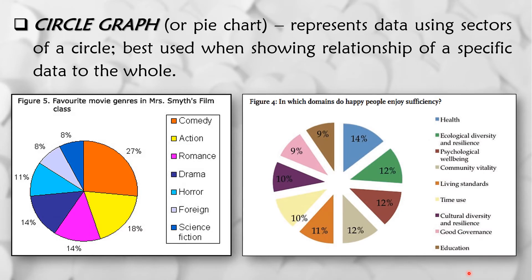Another example of circle graph or pie chart is this one. So again, ang mga percent na ito ay equals 100%. And then yung color blue natin that is for the health, in which domains do happy people enjoy sufficiency. And then itong turn percent naman ay sa time use.